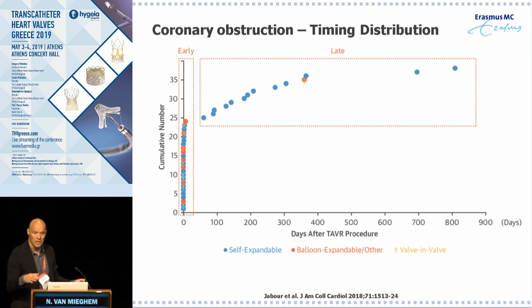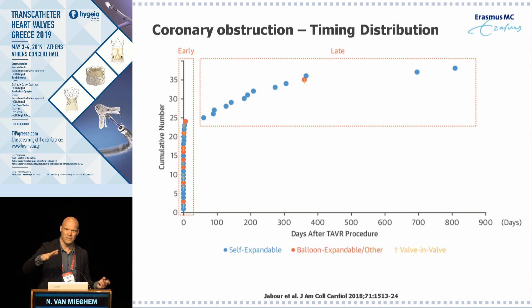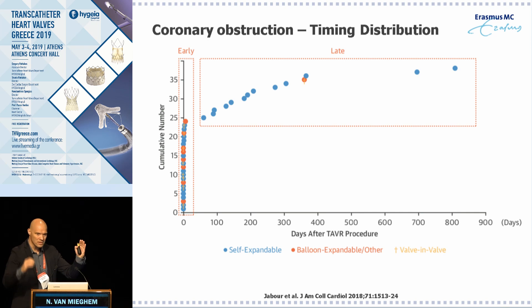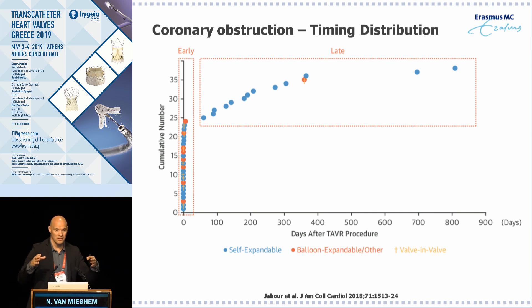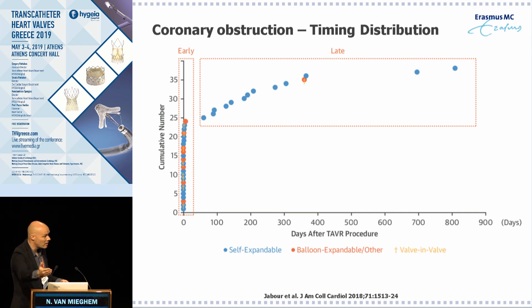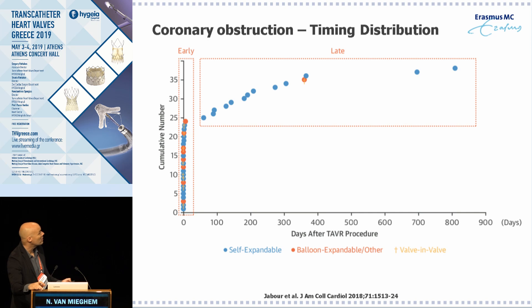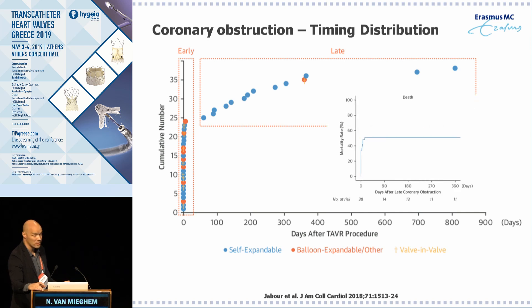Late coronary obstructions may happen more often with self-expanding devices versus balloon-expandable devices. This likely has to do with the frame design — cobalt chromium in balloon-expanding devices versus a nitinol frame in self-expanding devices. Our data at the Thorax Center from CT scans before, at six months, and at six years after valve implant showed that the CoreValve keeps expanding even years after implantation, which may explain a higher risk for very late coronary obstructions with self-expanding valves.